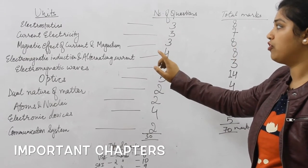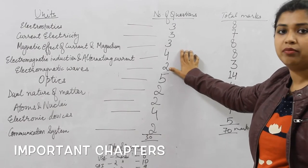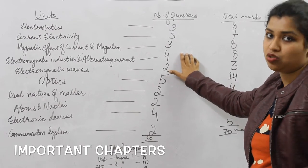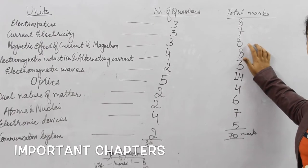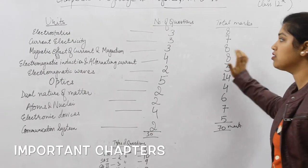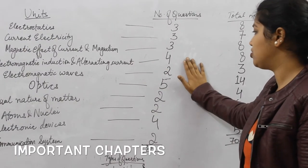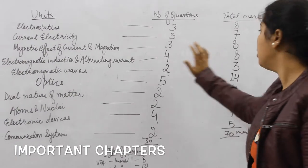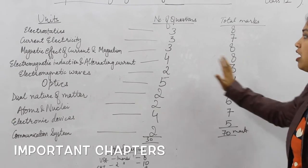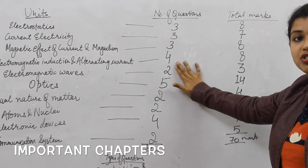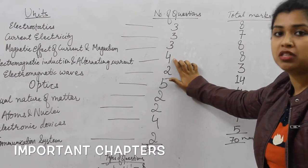Magnetic effect of current and magnetism: three questions will be asked from it — whether one mark, two marks, three marks, or five marks questions — and the total weightage given to this chapter is eight marks. Electromagnetic induction and alternating current: four questions will be asked from this chapter and the total weightage is eight marks. Since four questions are being asked, this chapter becomes a little important.